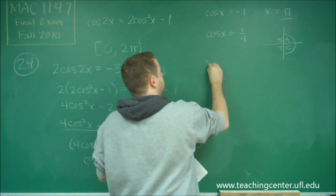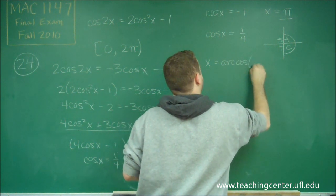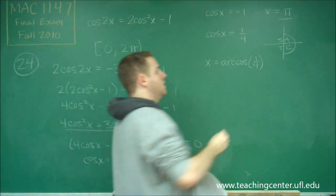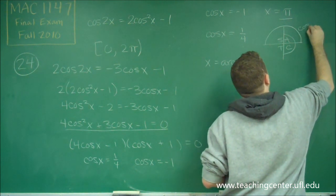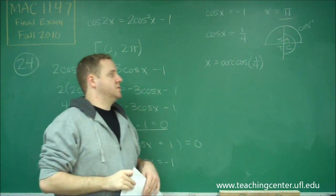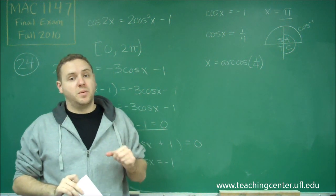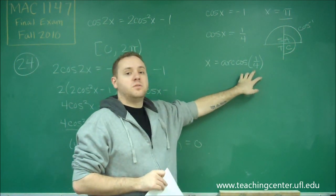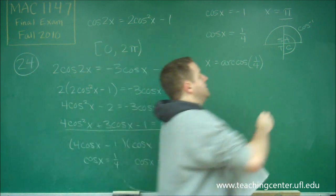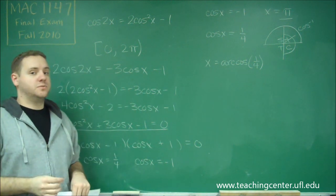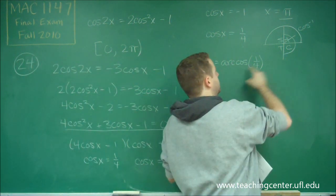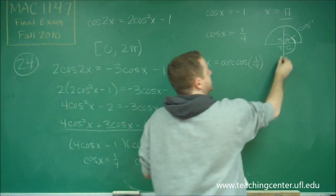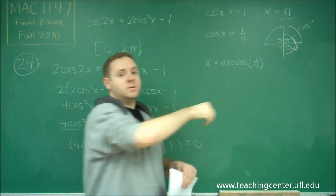If we write x equals arc cosine of 1/4, that is correct — however, that's only one of them. Remember that arc cosine can only output answers in the first two quadrants; that's one of the ranges of the arc trig functions you'll need to memorize. So arc cosine of 1/4 — or cosine inverse — gives us our quadrant 1 answer. But we also need the quadrant 4 answer, so we have to think about how to get that same angle down in the fourth quadrant.